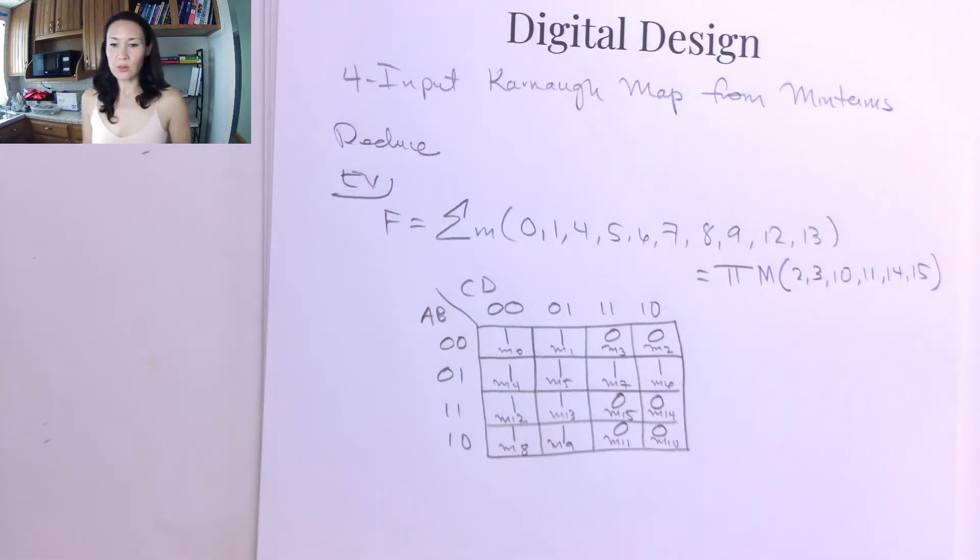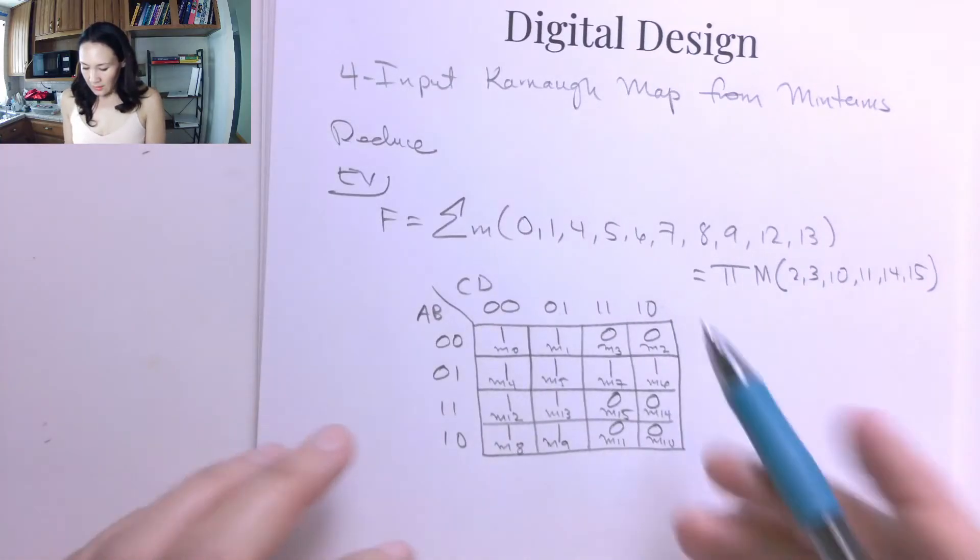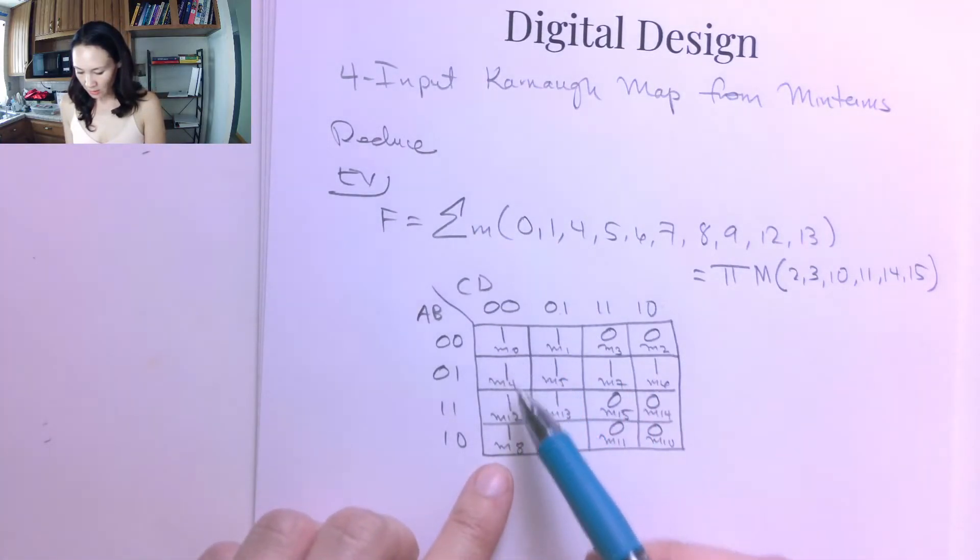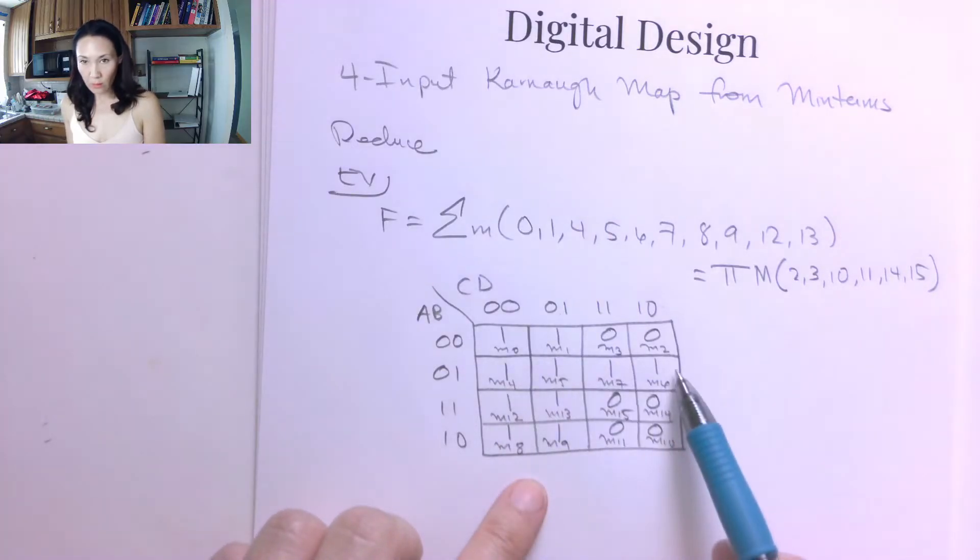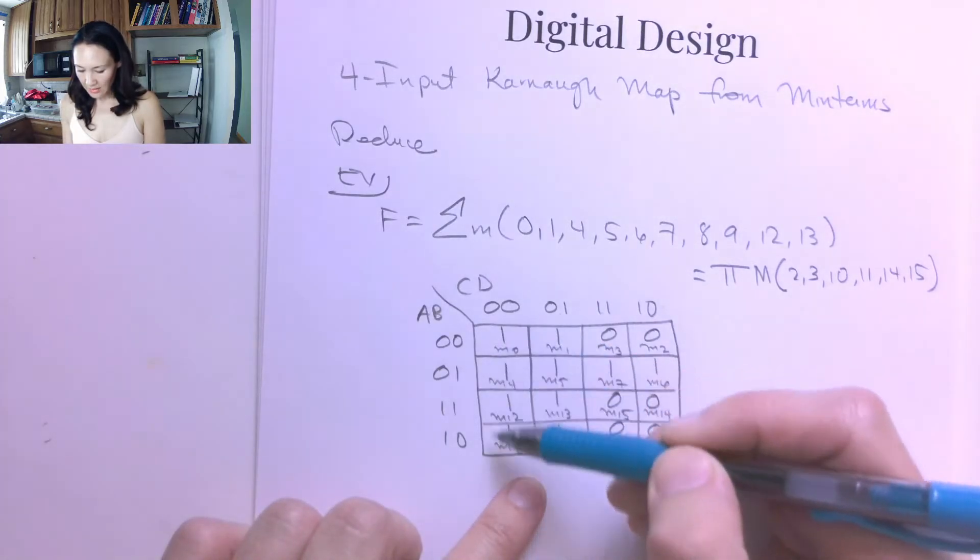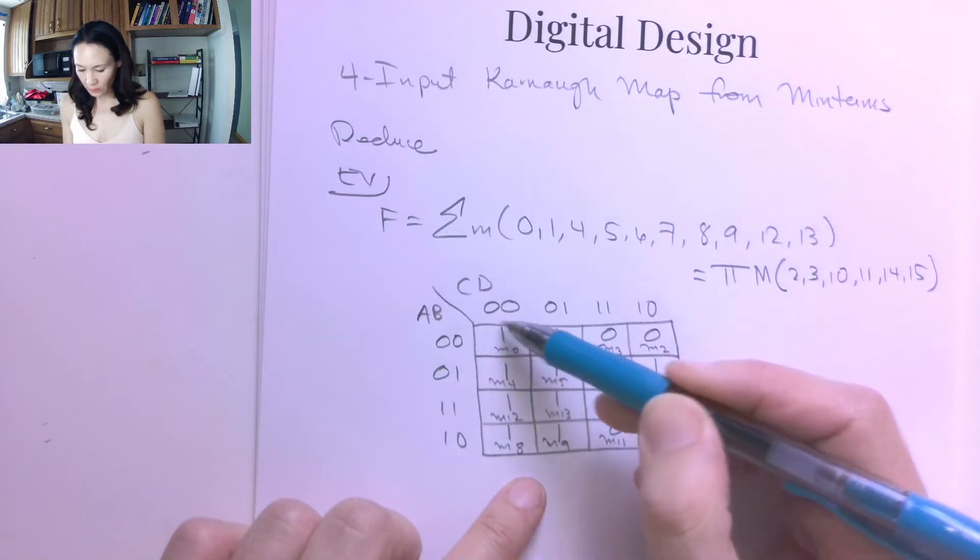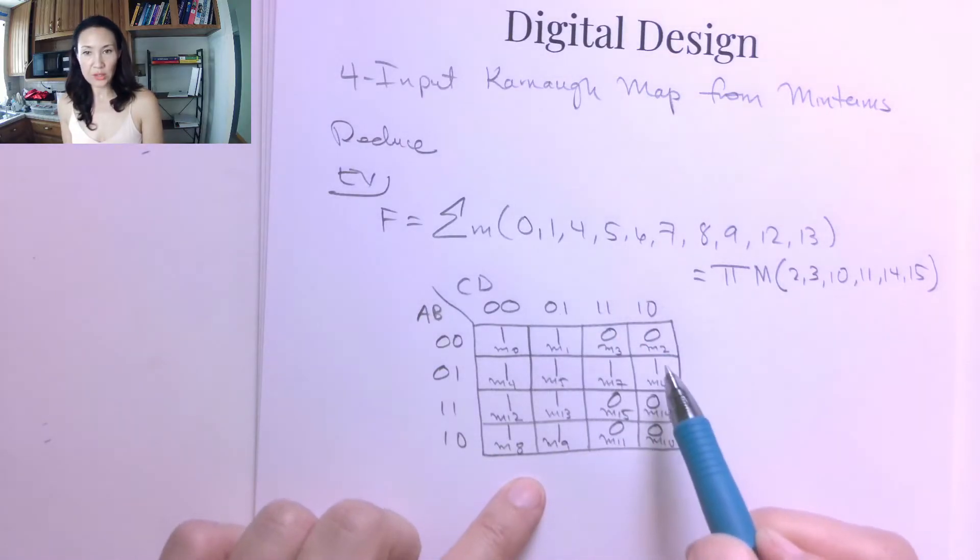So now we're ready to do our groupings. So as you can see, we have a column of 1s, a column of 1s, and a row of 1s here. We could group, make all these groups of, we could do a group of 4, a group of 4, and a group of 2.